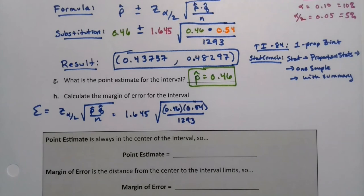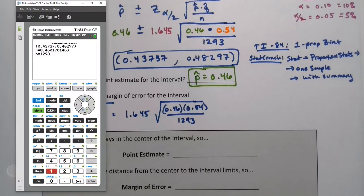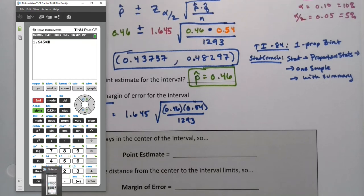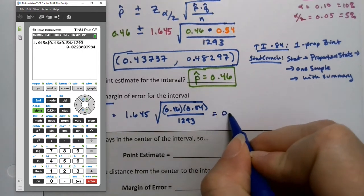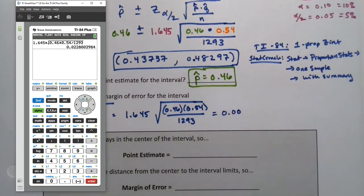But there's a sneakier way to get it, and I'll show you that in just a second. But first, I want to actually do this calculation. So if I take 1.645 and I multiply it by the square root of 0.46 times 0.54 divided by 1,293 — it'll work okay, even though there's no parentheses; all those parentheses meant was multiplication anyway — I get 0.0228.